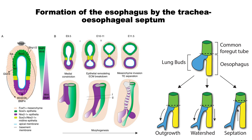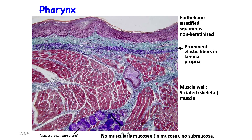The oesophagus forms from the primitive gut, the foregut. Initially you have one tube with a green part, a purple part, and a yellow part. The yellow part is constricting in the midline to form the tracheoesophageal septum, which severs the continuity of the header. The pharynx is the common opening for both the respiratory and digestive tract. Histologically it has a stratified squamous non-keratinized epithelium with prominent elastic fibers in the lamina propria, and striated muscle at the inferior portion cut in transverse section showing muscle fascicles.